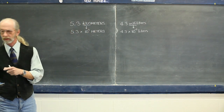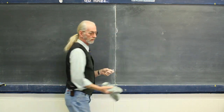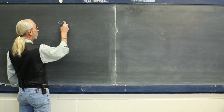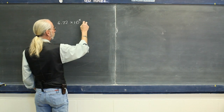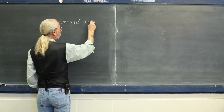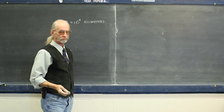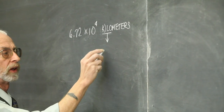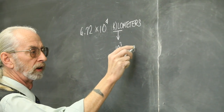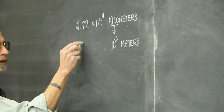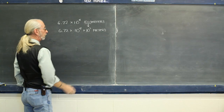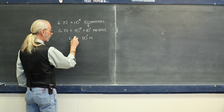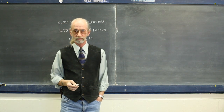Here's what I mean. Let's say you're working through a physics problem and you wind up with a final answer that looks something like this: six point seven two times ten to the fourth kilometers. We can simplify that by first replacing kilo with ten to the third, bringing down meters. Ten to the fourth times ten to the third gives ten to the seventh meters. Six point seven two times ten to the seventh meters. Much simpler.